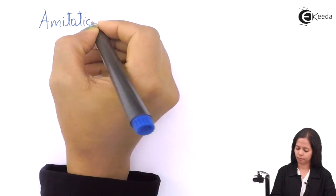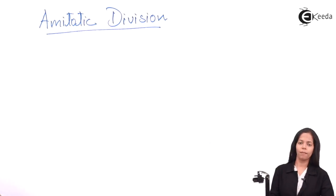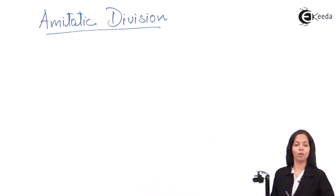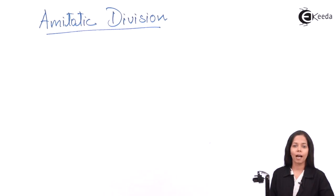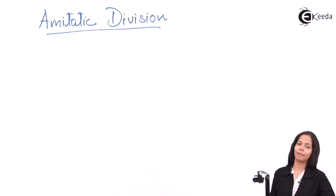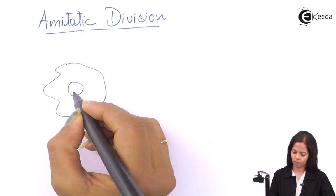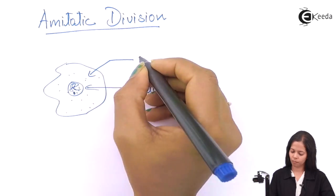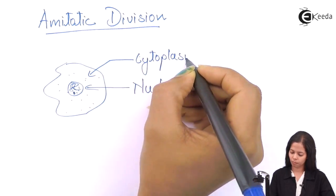Let's see what is the meaning of my topic. I will explain this by giving an example — the example is of amoeba. I hope you all know the body structure of amoeba. Amoeba is a single-cell organism, that is unicellular, and it has an irregular body. So amoeba looks somewhat like this.